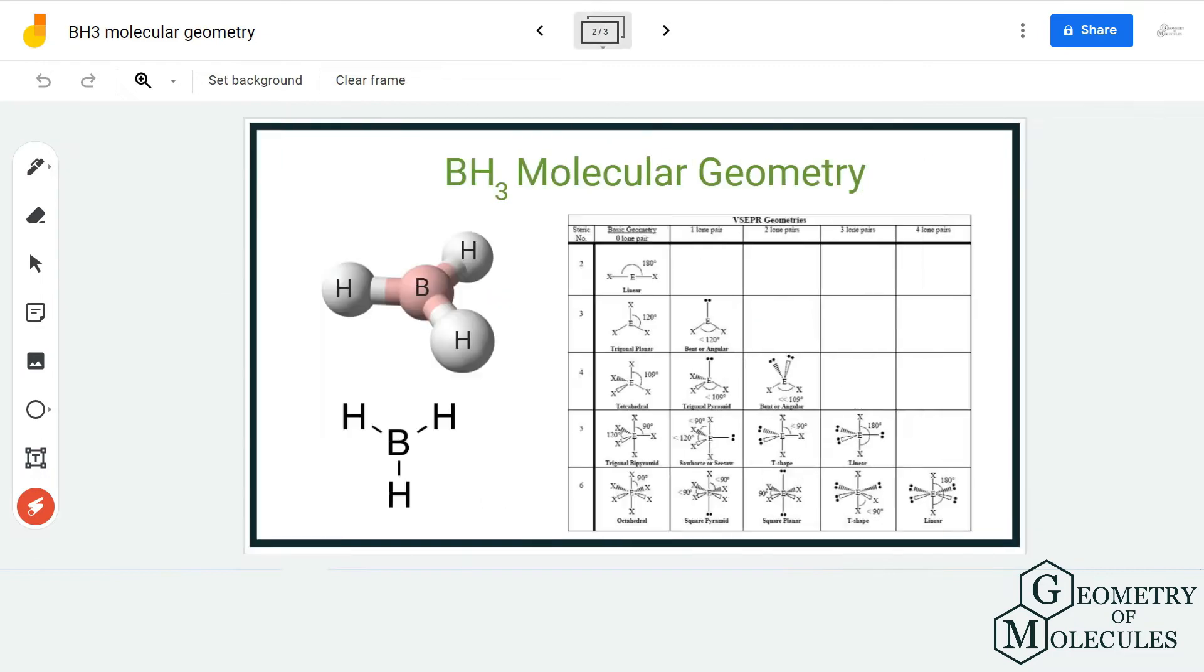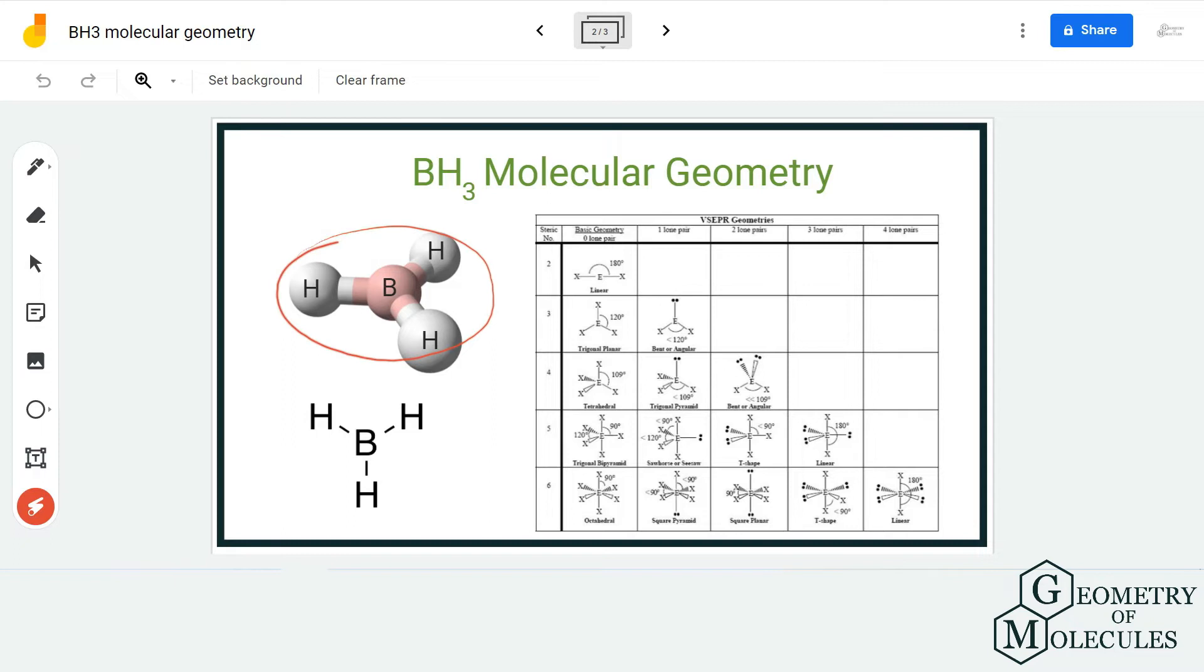If you move forward and look at its shape, you can see that all these three hydrogen atoms are arranged evenly in the structure. They are arranged as far as possible from each other to avoid any repulsive forces because of bonding pairs of electrons.